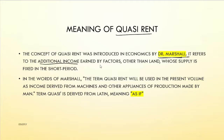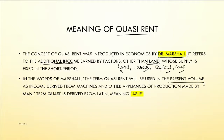Quasi Rent refers to additional income earned by factors other than land. The factors of production are: land, labor, capital, and entrepreneur. From these factors, the income other than land is called Quasi Rent, and its supply is fixed in the short period. In Marshall's words, the term Quasi Rent is used as income derived from machines and other appliances of production made by man.